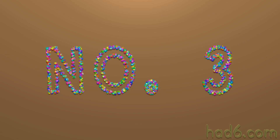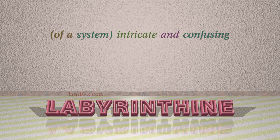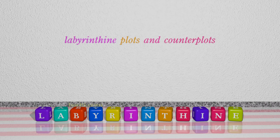Number 3: Labyrinthine. Which means of a system, intricate and confusing. For example: labyrinthine plots and counter plots.